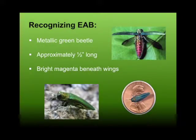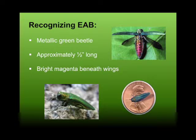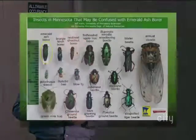What does emerald ash borer look like? We have vials in the back with adult beetles in them — they're very, very small. I carry a keychain emerald ash borer with me because I get so many questions about it. It's a metallic green beetle only about a half inch long, with a bright magenta color underneath the wings. A good trick: place it on a penny — if it fits across Lincoln's bust, it could be emerald ash borer.